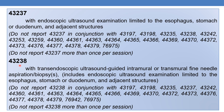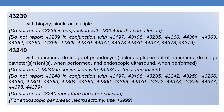The next CPT is 43238. It deals with esophagogastroduodenoscopy, flexible, transoral, with transendoscopic ultrasound-guided intramural or transmural fine needle aspiration or biopsy. It includes endoscopic ultrasound examination limited to the esophagus, stomach, or duodenum and adjacent structures. This must also be reported only once per session. The next CPT is 43239: esophagogastroduodenoscopy, flexible, transoral, with biopsy, single or multiple. Do not report 43239 in conjunction with 43254 for the same lesion.